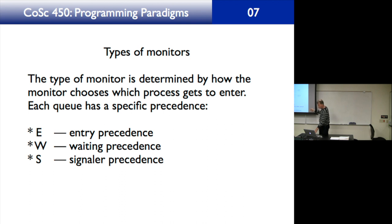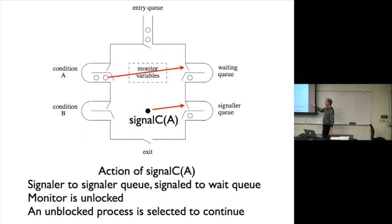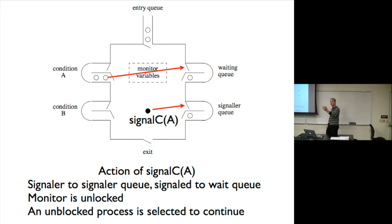We can also choose from the signaler queue. We cannot choose from the condition queues because the monitor code determines who moves from each condition queue to the waiting queue. The program determines who goes from each condition to here — you can't have the monitor just pick arbitrarily from those condition queues.